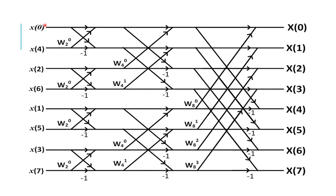For the third stage, simply write W8 to the power of 0, 1, 2, and 3. Your diagram will have twiddle factors filled as W8 to the power of 0, 1, 2, 3. The first stage has W8 to the power of 0. The second stage has W8 to the power of 0 and W8 to the power of 2 placed at the appropriate nodes.